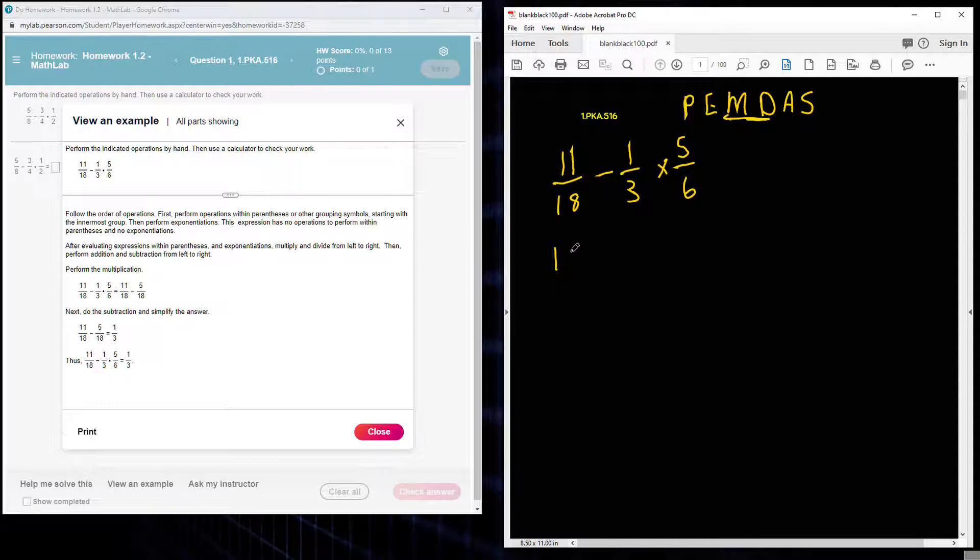When we rewrite it, we'll have 11/18 minus 1 times 5 divided by 3 times 6. So I'm multiplying, and the result of that multiplication: we'll have 11/18 minus 5/18.